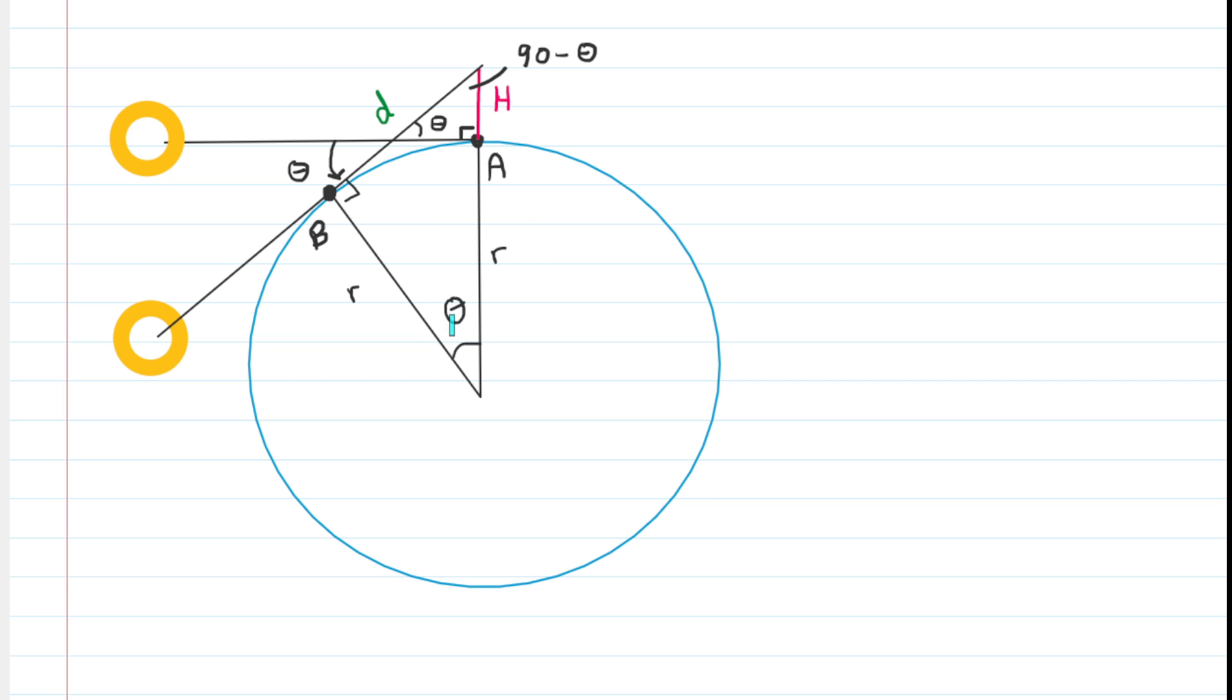So that's 90 minus theta. But now let's look at the larger right triangle. We have this 90 degree angle. We have the angle we just discussed. And then we have the angle at the center of the Earth, which we've labeled theta. Now, again, that should be justified, because if you add those three angles together, if you add 90 minus theta to 90 to theta, again, the thetas cancel, and the 90 plus 90 makes 180. So it's all holding together, obeying the 180 degree rule for triangles.